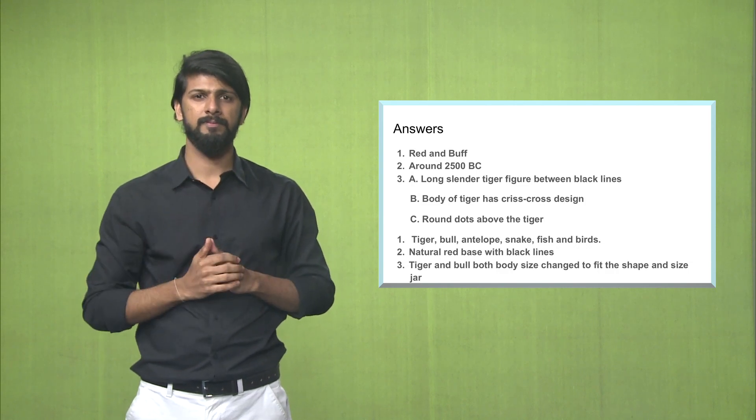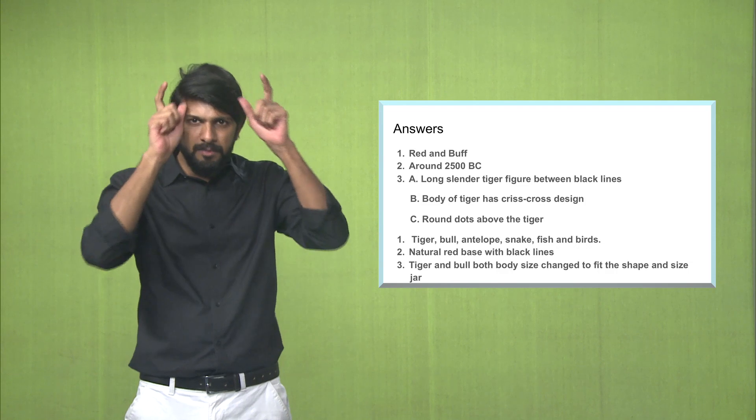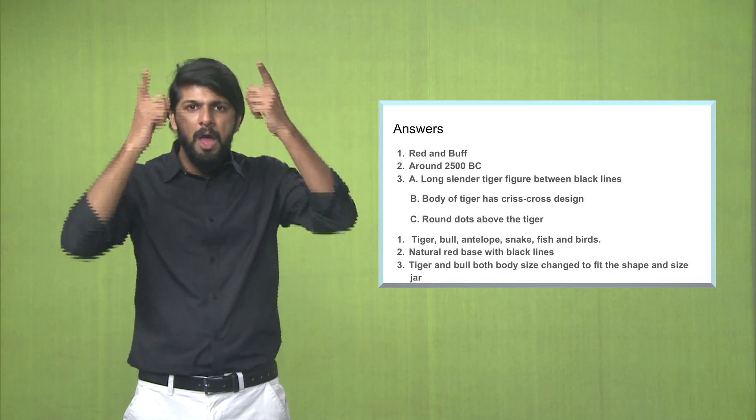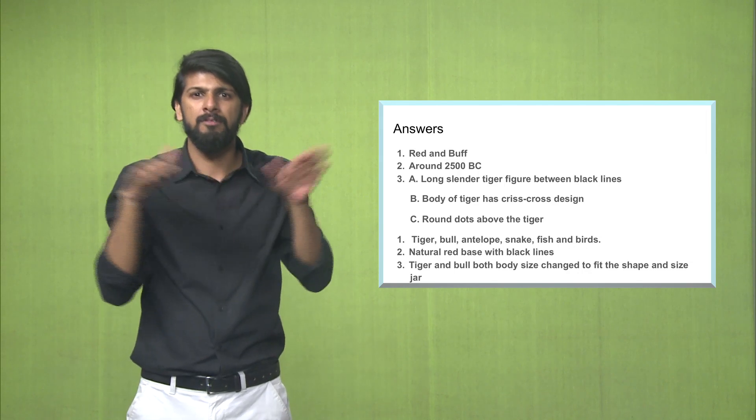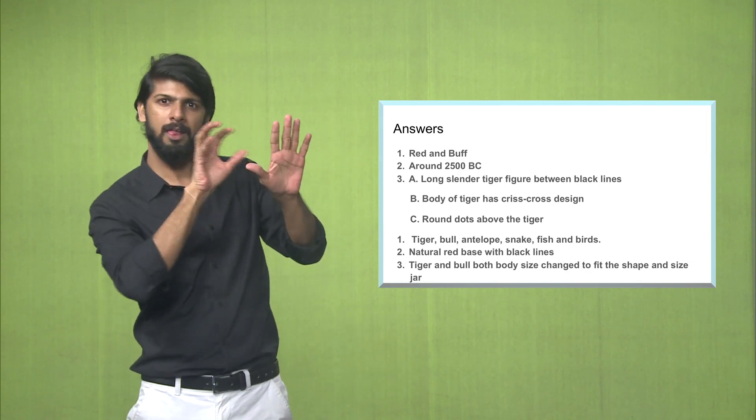Answer number four, the animal figures primarily depicted were tiger, bull, antelope, snake, fish and birds.